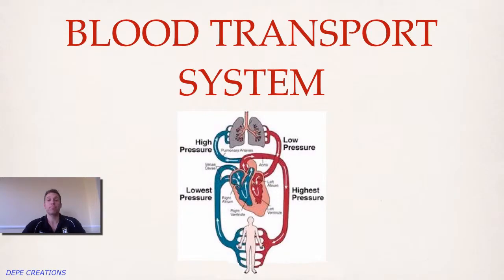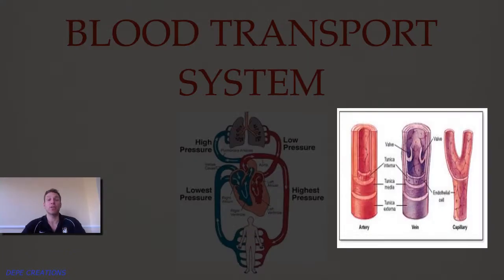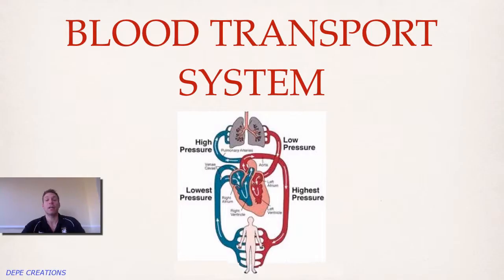The blood transport system moves blood around the body so we can live and complete our activities. We've got a couple of circulations to understand: the pulmonary circulation and systemic circulation. We also need to understand how the blood vessels — the arteries, veins, and capillaries — differ because they have different roles, and the fact that redistribution of blood occurs when we do different activities.